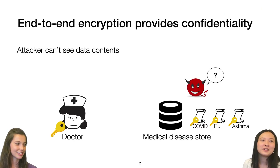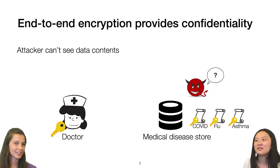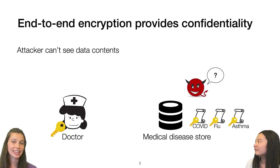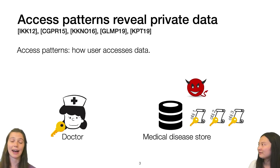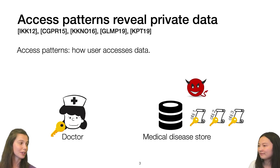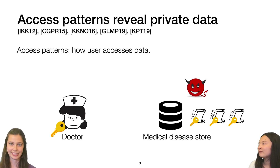End-to-end encryption provides confidentiality, which means that the attacker can't see the contents of patient records if they're stored in an encrypted form, even if we store them on an untrusted server. However, access patterns can still reveal private data. By access patterns, I mean how the user accesses the data. To make this a bit more concrete, I'm going to walk through a simple example with a medical disease store.